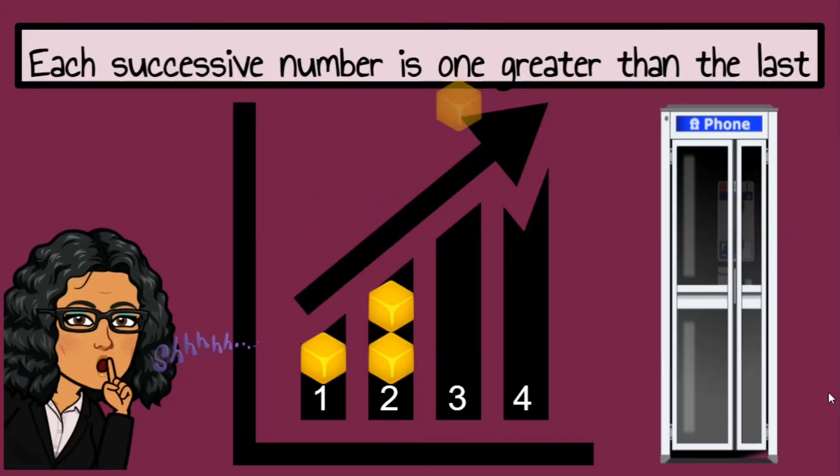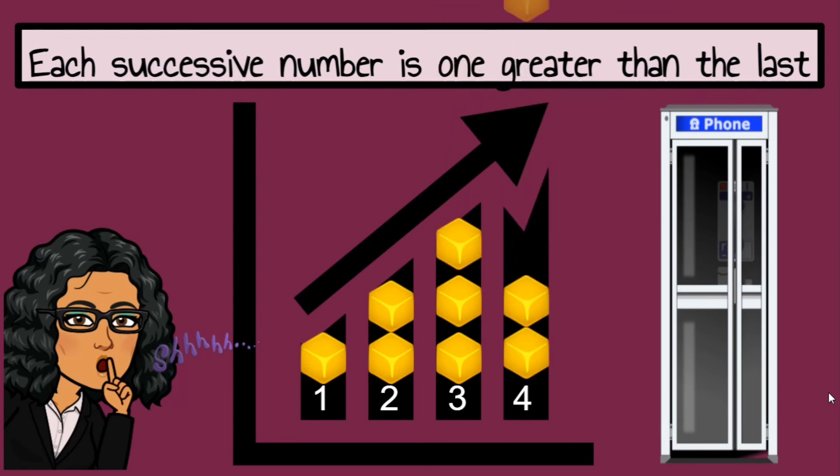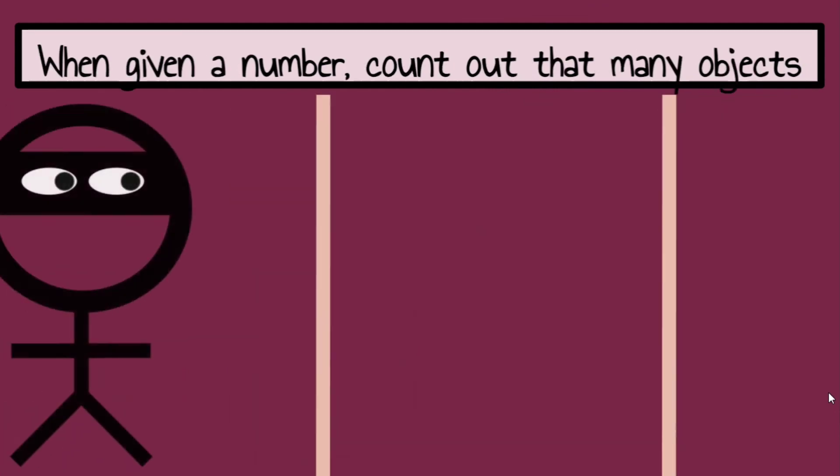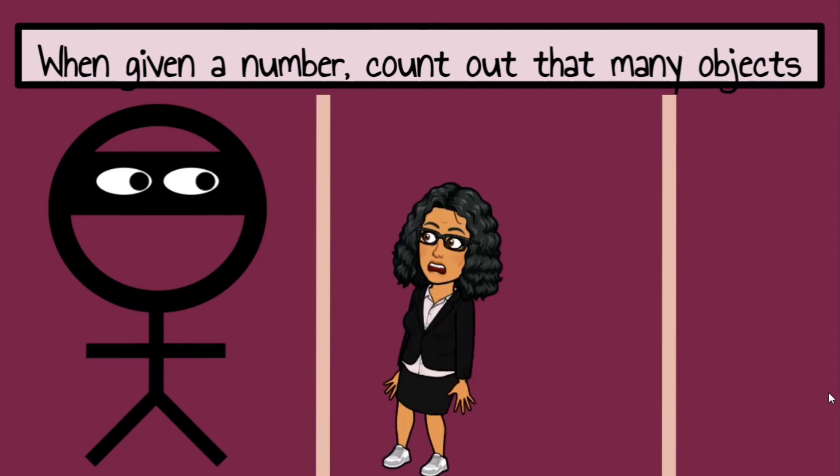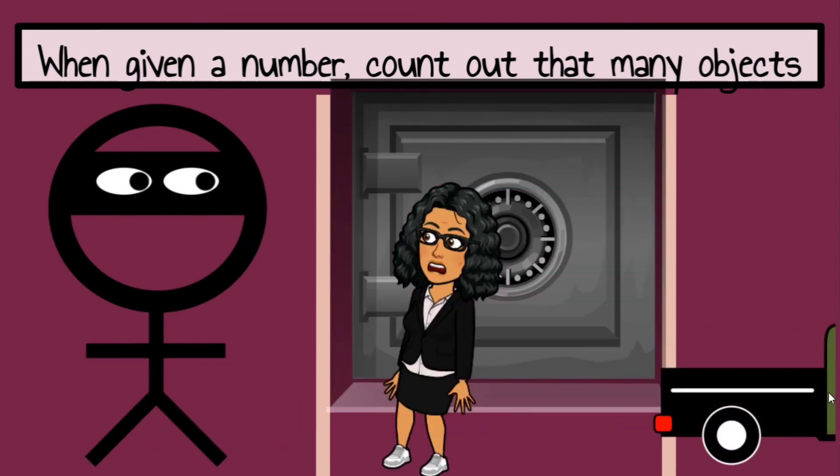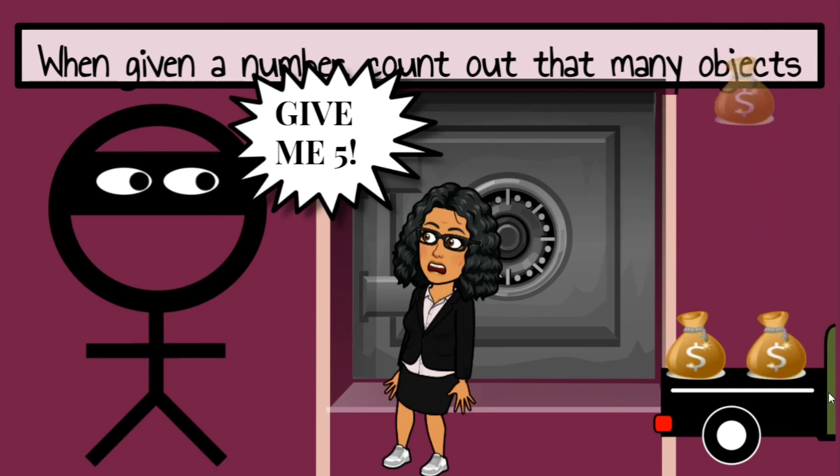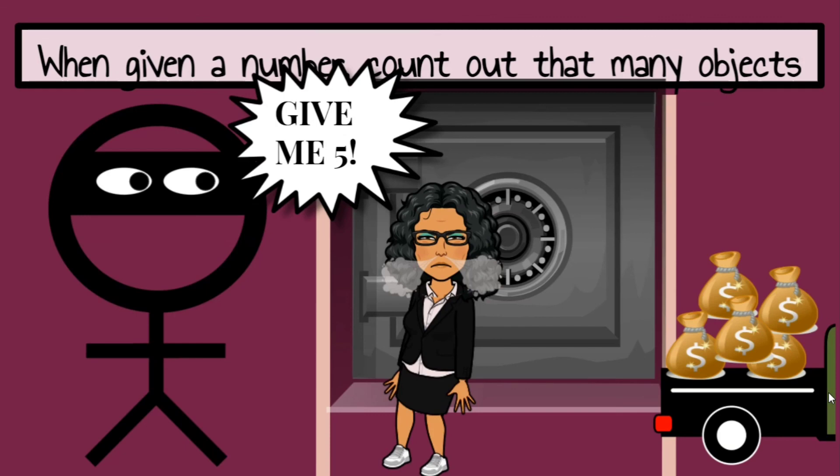By using cubes or objects or even pictures, we want the students to understand that each number is one more than the last previous number. And once again, you might think they already know this, but they have to see it to actually understand that. And we also want them to be able to count out the amount of objects when they're given a certain number. So if the robber tells me to give them five bags of money, I better know how to count out five bags of money. So the student will be given a number and hopefully they'll count out that many objects.